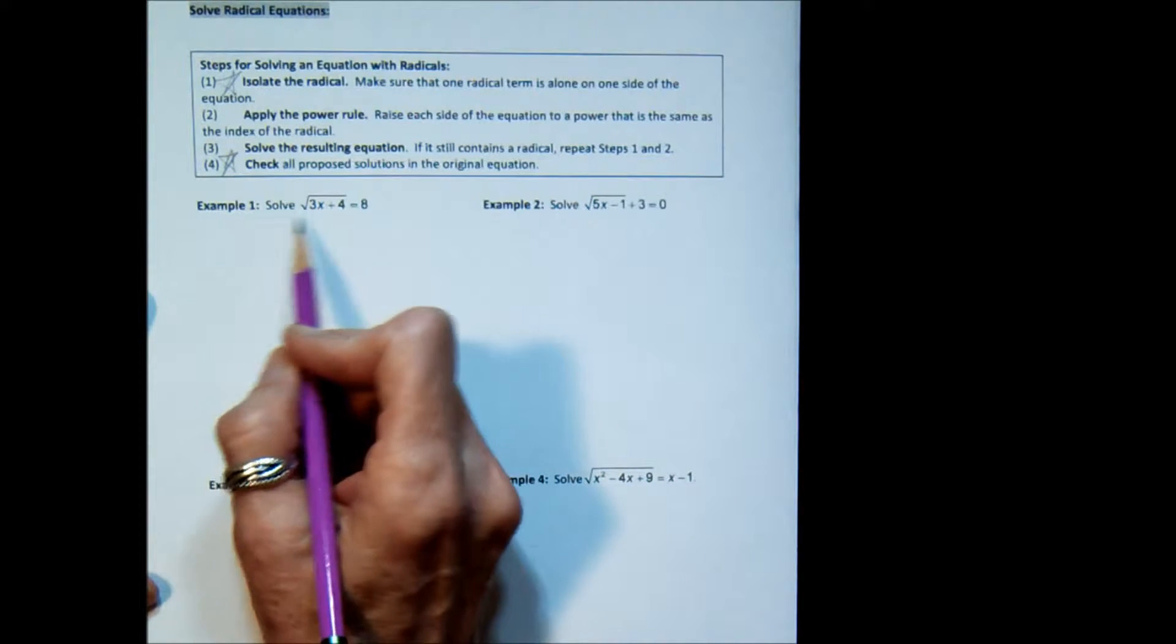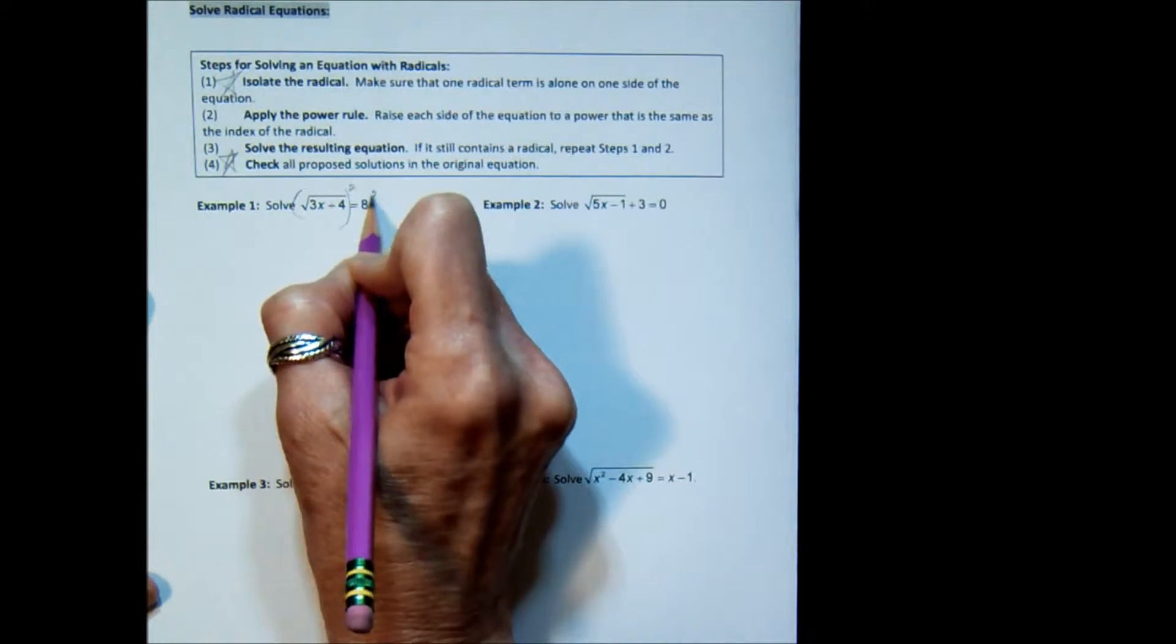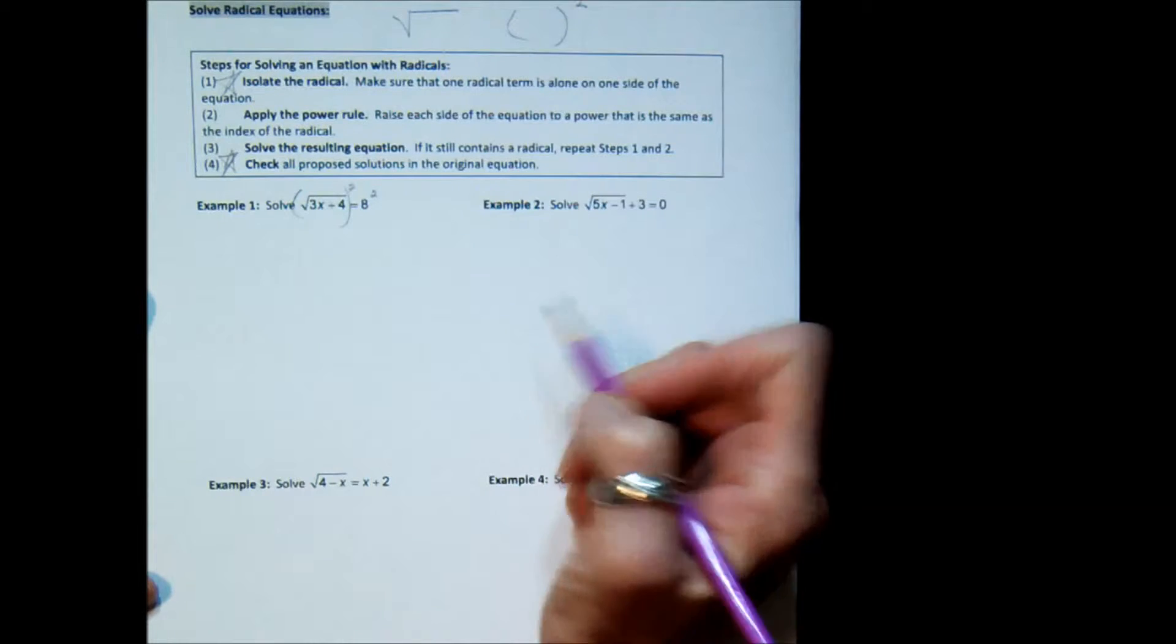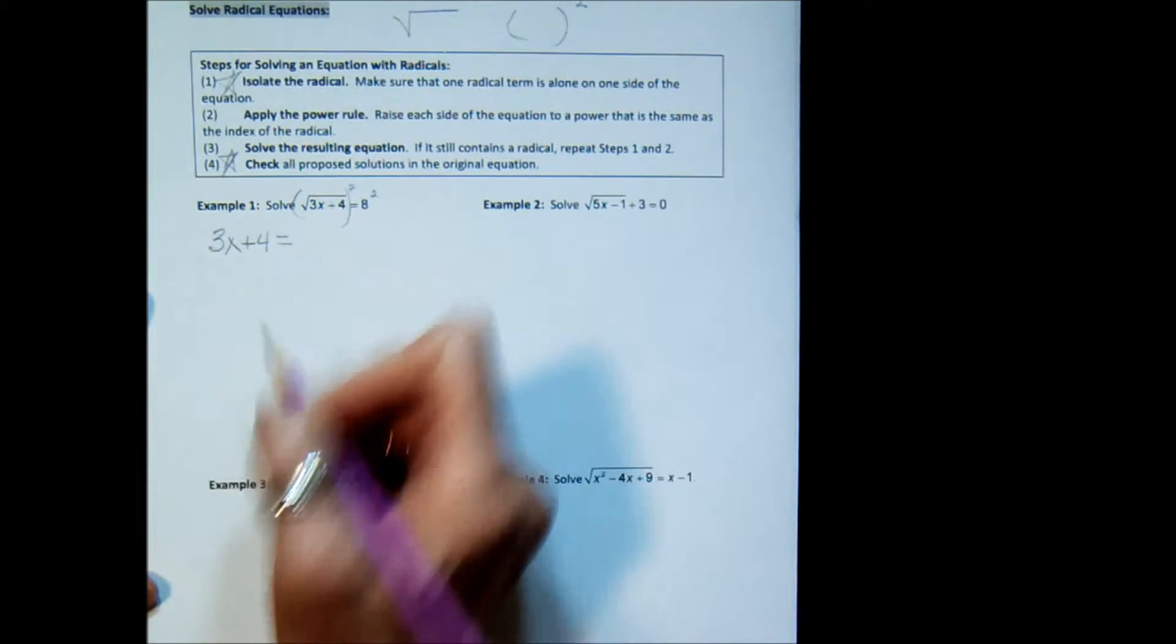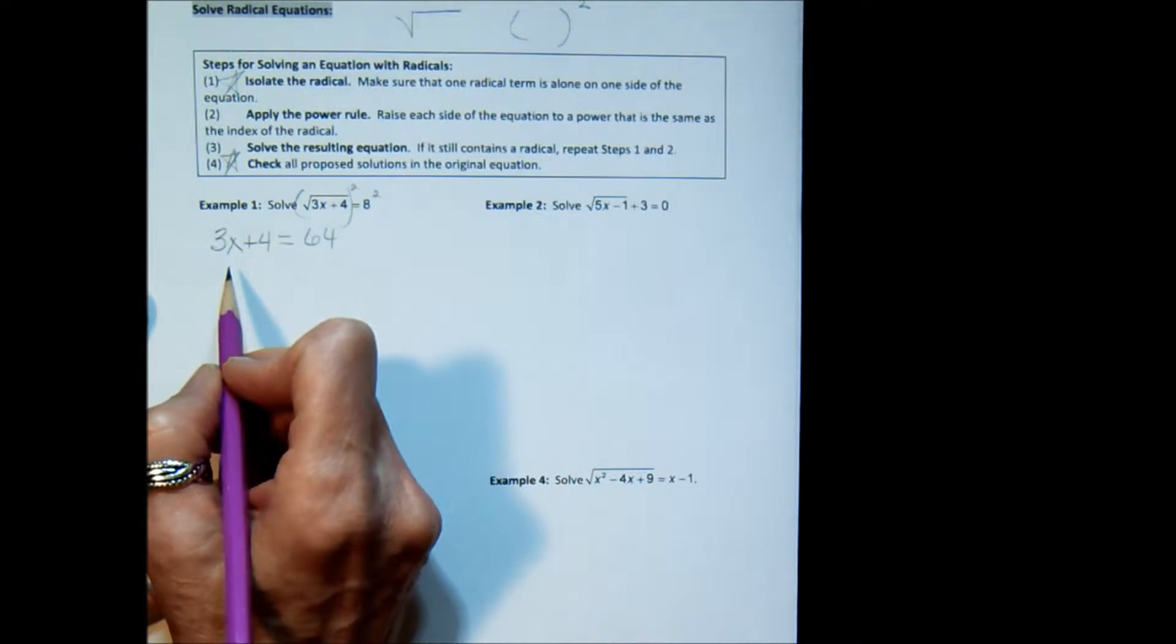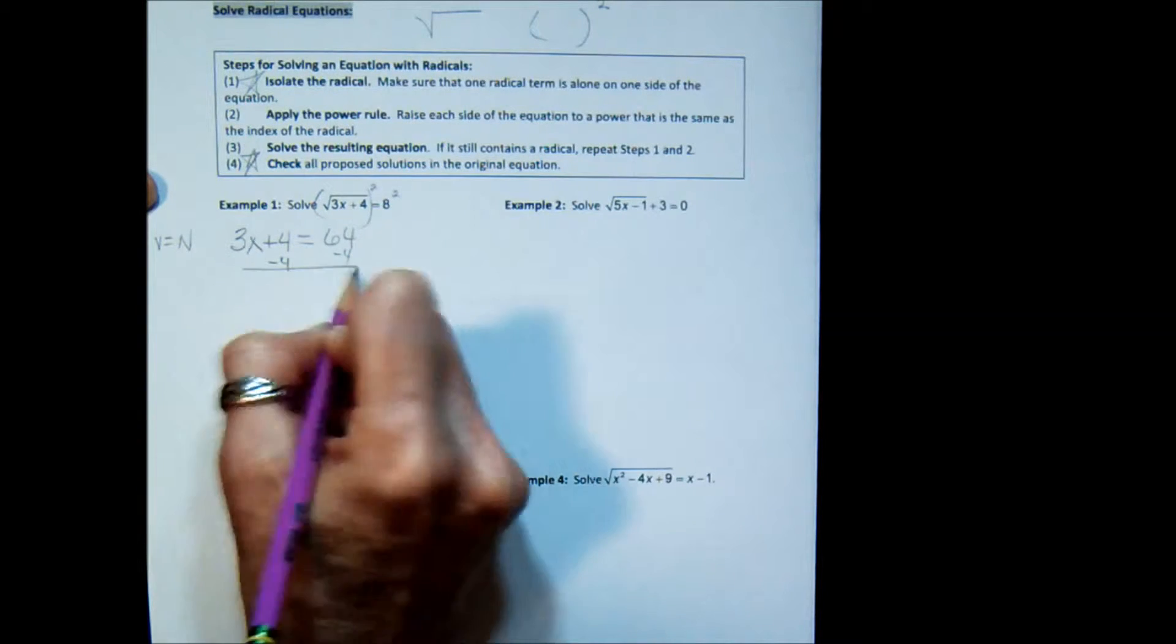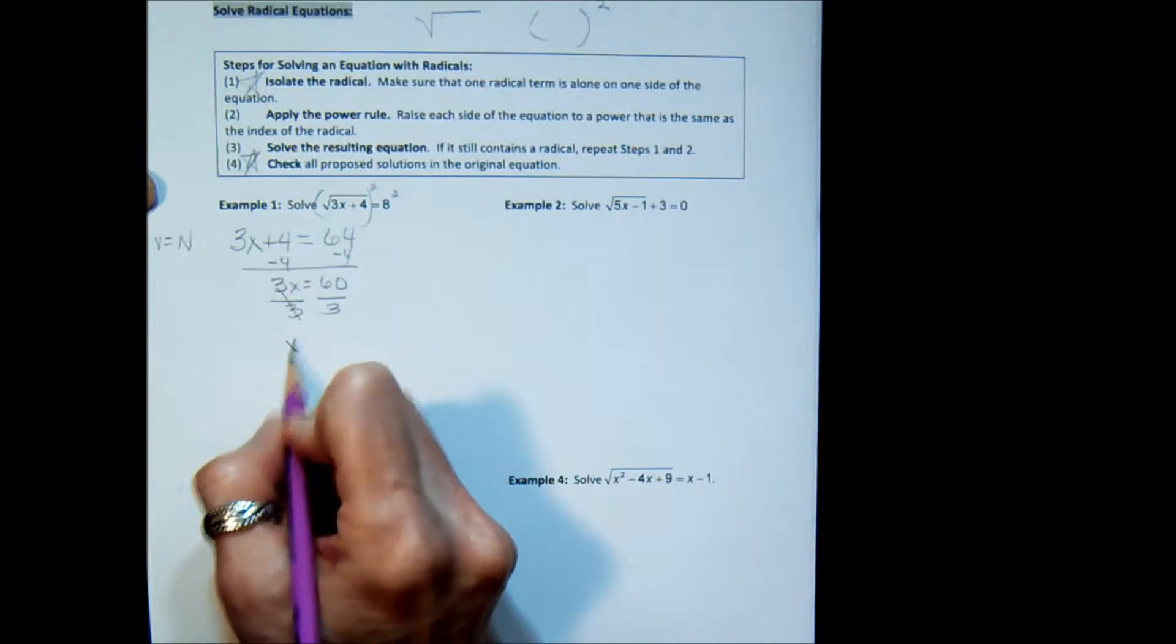Let's take a look at this first one. Is the radical isolated? Yes, it is. It's a square root, so the power that I raise it to is the second power and I have to do that on both sides. Remember that a square root and something squared are inverse operations and they undo each other. So this squaring undoes the square root and I'm just left with 3x plus 4 equals 64. Now what's left is just a linear equation in one variable. So I get the variables on one side and the numbers on the other side. Subtract the 4, I get 3x equals 60, divide both sides by 3 and we get x equals 20.